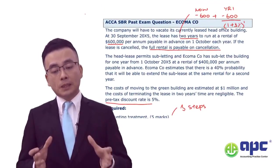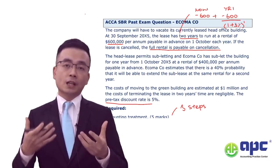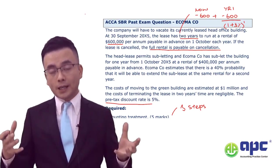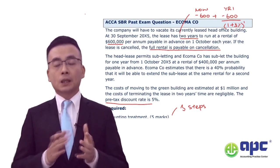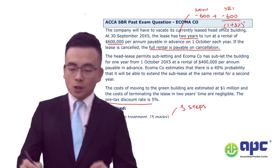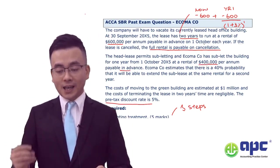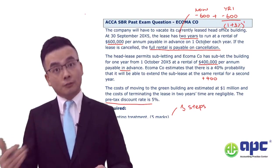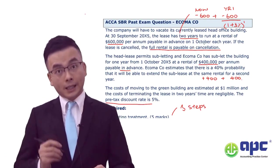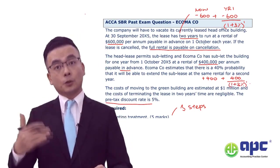Moving on — the head lease permits subletting, which means that even though we pay the rental payment, we don't simply pay the rental and receive nothing, because we can sub-lease to another party. With a rental of $400,000 payable in advance, this means that I can receive income of $400,000 now, and in one year's time another $400,000, discounted at the pre-tax discount rate to the power of one because that's for the next year.